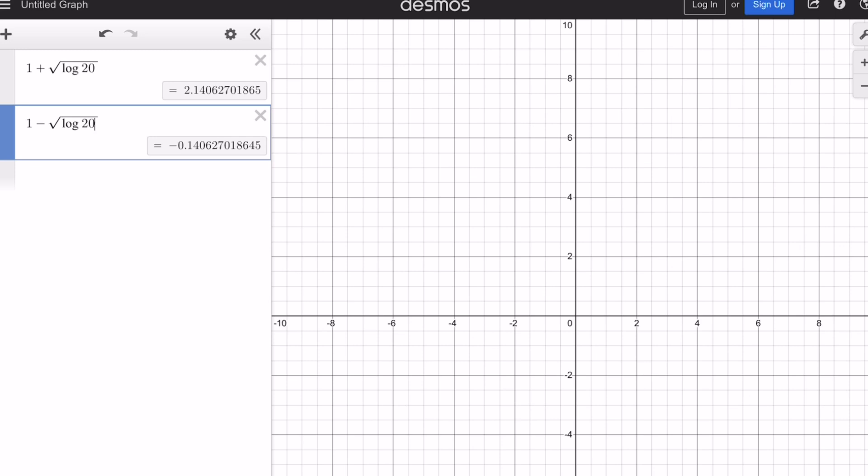So these are the numerical values. Notice that the positive one or the larger one is going to give us 1 plus square root of log 20 which is about 2.14. And the second one is negative, negative 0.14. So you're going to see both of these x values on the graph. But when it comes to finding the y values I'll also show you how that works out.